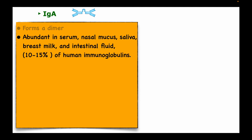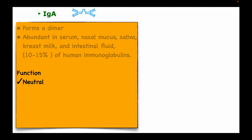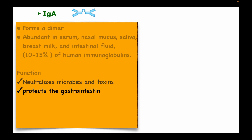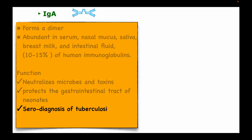Immunoglobulin A forms a dimer of two monomers joined at the FC portion. It is abundant in serum, nasal mucus, saliva, breast milk, and intestinal fluid, accounting for about 10 to 15 percent of all human immunoglobulins. Its functions include neutralizing microbes and toxins, protecting the gastrointestinal tract, and it can be used in the diagnosis of tuberculosis and respiratory syncytial virus.